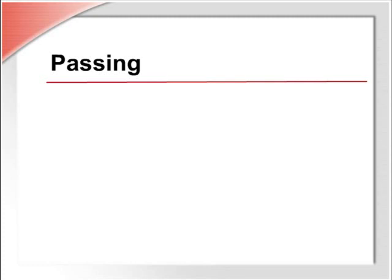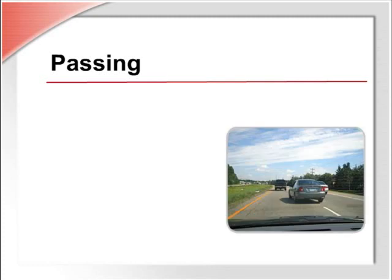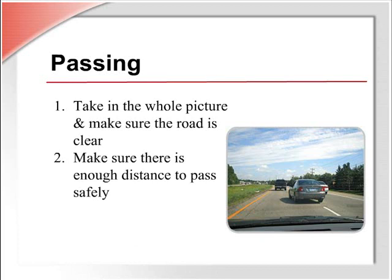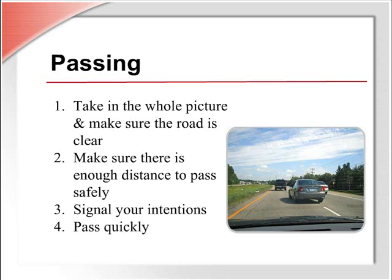Awareness of your environment is critical when moving with traffic. When following a slow-moving vehicle, first ask yourself if the pass is really necessary. If you decide to pass, take in the whole picture — make sure the road is clear, check your mirrors to be sure no one else is starting to pass you, and make sure there is enough distance to pass safely. Signal your intentions, always communicating with others. Pass quickly but safely based on conditions, then resume your normal speed. If you notice that a vehicle is passing you, look ahead for potential dangers and reduce your speed if necessary.